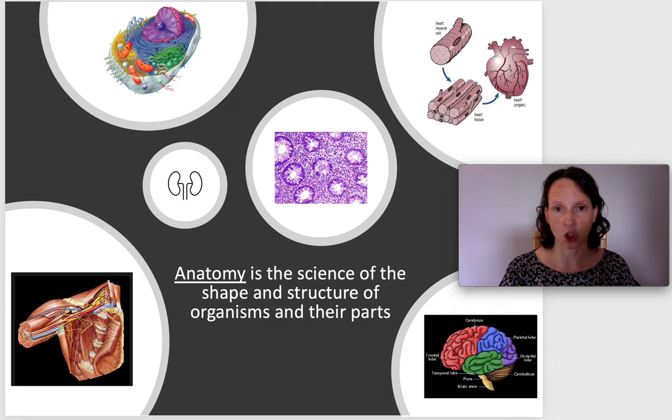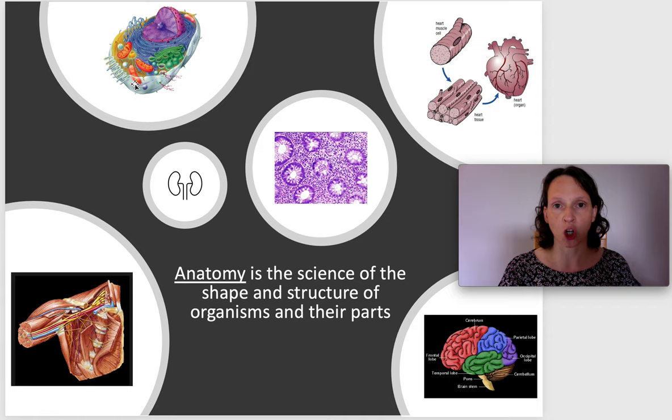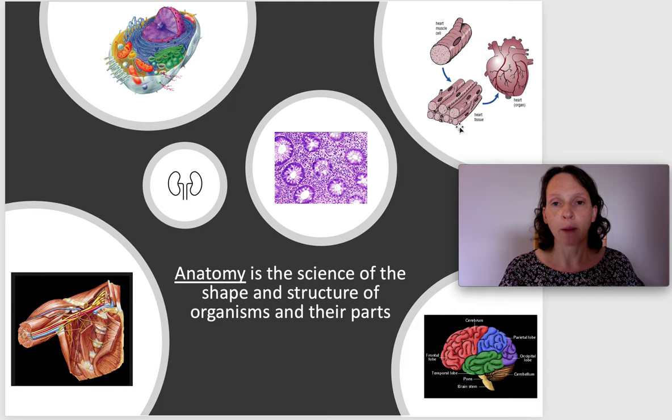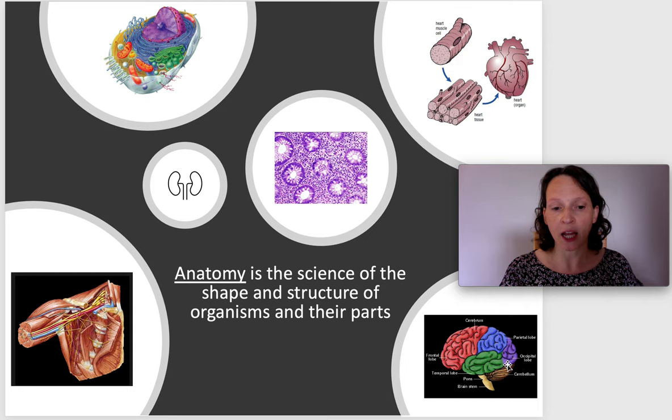Anatomists are also interested in the cells, the organelles and the subcellular structures which make up the cells, and how these cells come together to form what we call the tissues of the body. The tissues in turn come to form the organs and the organ systems of the body. For example, if you study anatomy you'll have the opportunity to learn about organs such as the heart and the cardiovascular system, and the study of the brain — neuroanatomy.